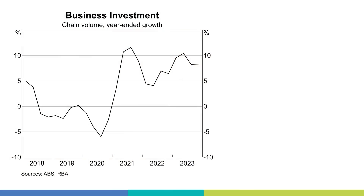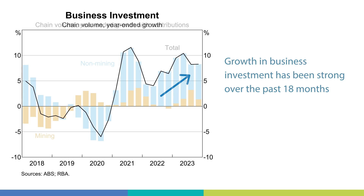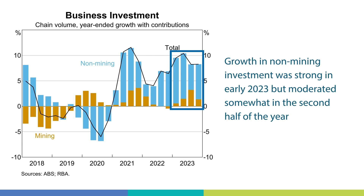Let's turn to the business sector now. Growth in business investment — the black line — has been strong over the past year and a half, and this has supported demand in the economy. It's useful to split business investment into two categories: mining and non-mining. Growth in non-mining investment was strong in early 2023 but has moderated somewhat in the second half of last year. And looking ahead, firms expect the pace of non-mining investment growth to slow over the next year.